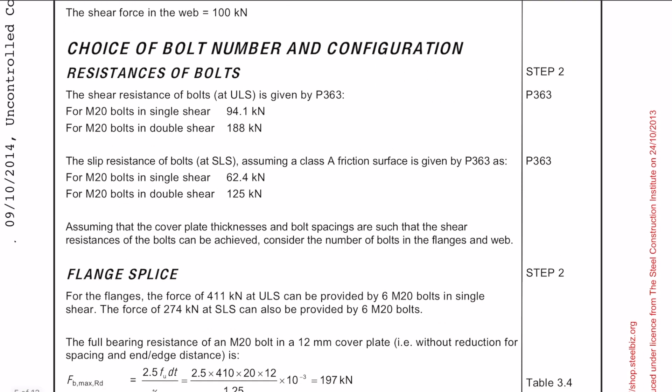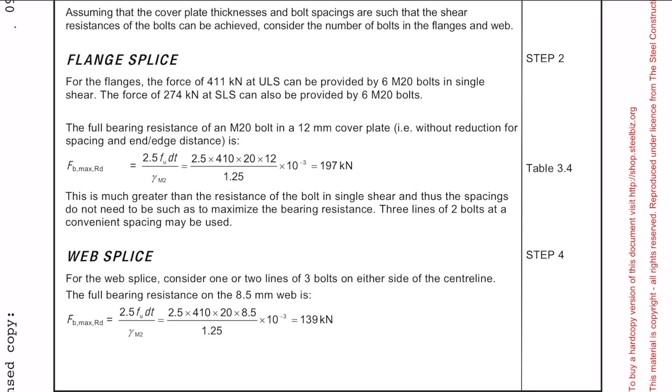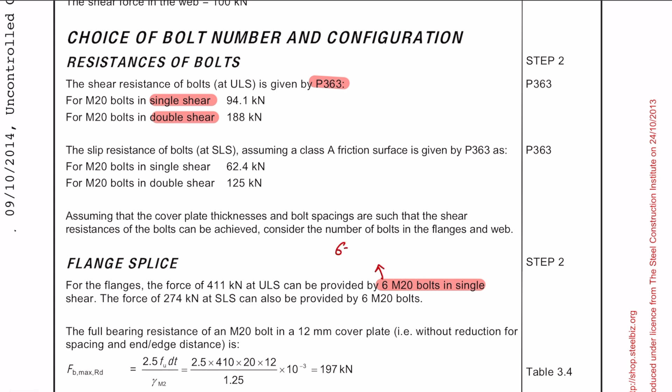The shear resistance of bolts at ULS and SLS is given in P363 and it's given in both single and double shear. The design shear force can be resisted by 6 M20 bolts in single shear. And this is done simply by multiplying the bolt shear resistance by 6 and you'll do the same for the serviceability limit state.